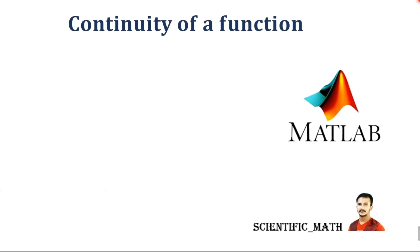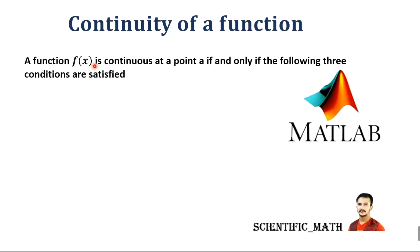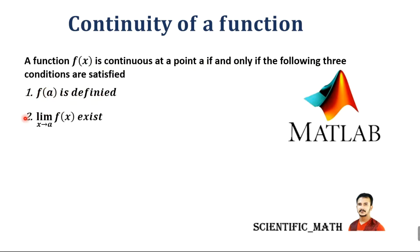Let's start today's lecture: continuity of a function. A function f(x) is continuous at a point a if and only if the following three conditions are satisfied. First, the value of the function at point a is defined. Second, the limit as x approaches a of f(x) exists. Third, the limit as x approaches a of f(x) should be equal to the value of the function at point a.